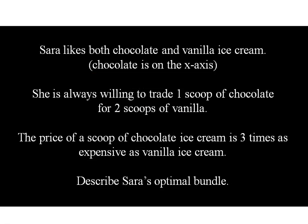Sarah likes both chocolate and vanilla ice cream. Let's have chocolate on the x-axis. She's always willing to trade one scoop of chocolate for two scoops of vanilla, and the price of a scoop of chocolate is three times as expensive as vanilla. Let's describe Sarah's optimal bundle.